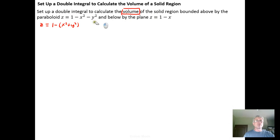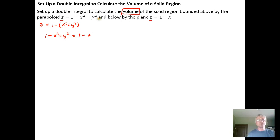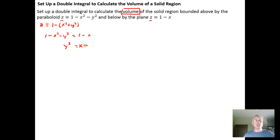The way to find what the intersection of the surfaces looks like is to set the surfaces equal to each other. So I set 1 minus x squared minus y squared equal to 1 minus x. It would be easy to solve this for y — for example, add y squared to both sides, subtract 1, add x, to get y squared equals x minus x squared, which allows us to solve for y.